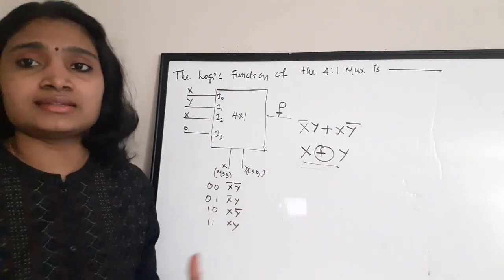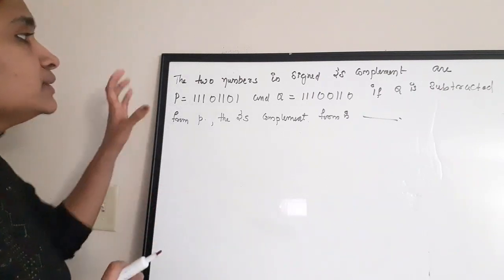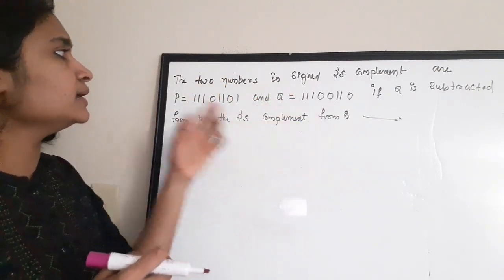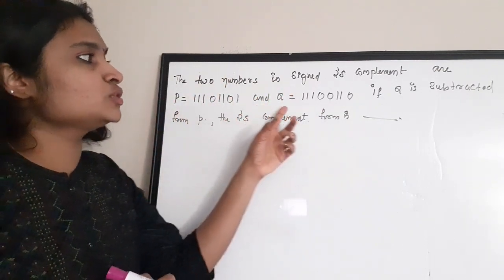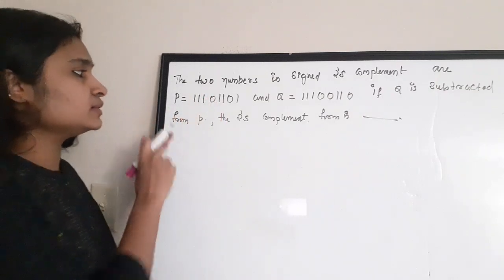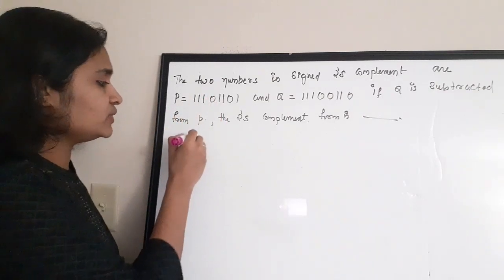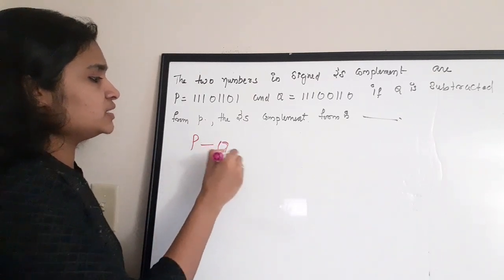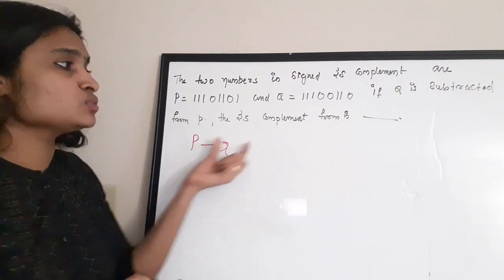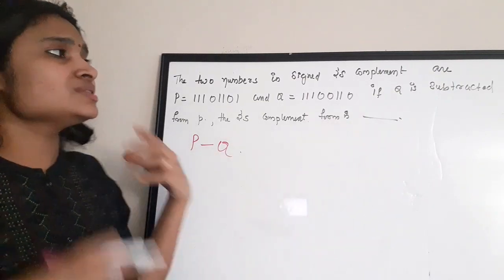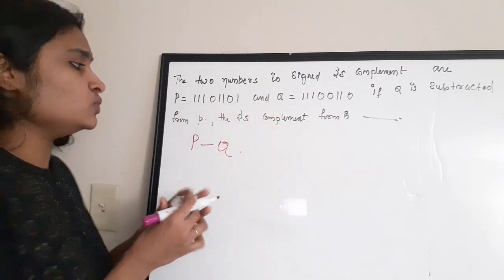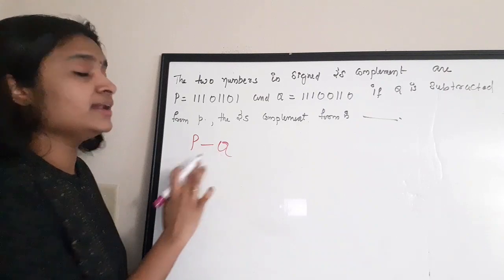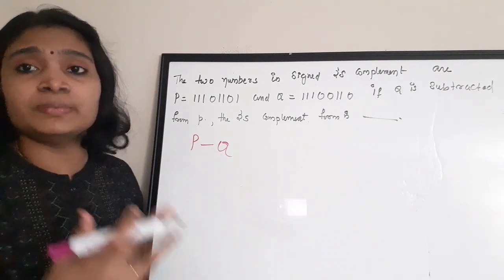The next question is a two's complement type. Two numbers are given in signed two's complement form: P and Q. You have to find P minus Q in two's complement. The method is: take the two's complement of Q, then add it to P. That gives the subtraction result.